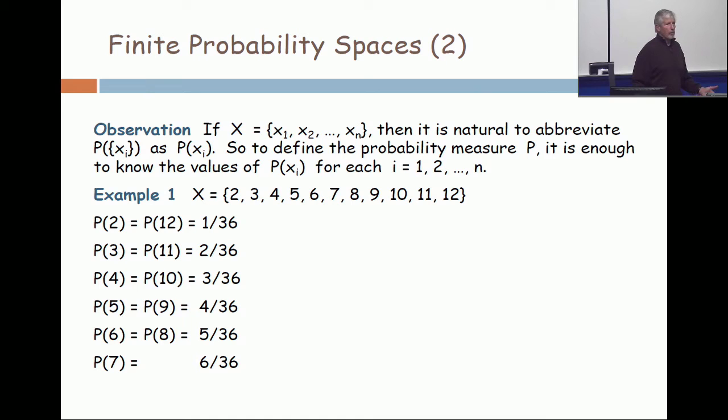The probability of 4 - how do you get a 4? Three and a 1, a 2 and a 2, or a 1 and a 3. Three different ways to get a 4, three different ways to get a 10. To get a 7: 6 and 1, 2 and 5, 3 and 4, 4 and 3, and so on.